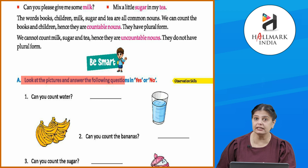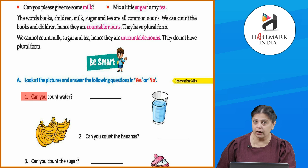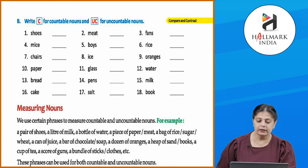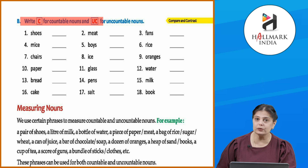Okay, so now let's become smart and look at the pictures and answer the following questions in yes or no. Can you count water? If you can, then mention yes, and if you cannot, then mention no. Now write C for countable nouns and UC for uncountable nouns — just like shoes: a pair of shoes, you can count them, so you'll mention C across it.